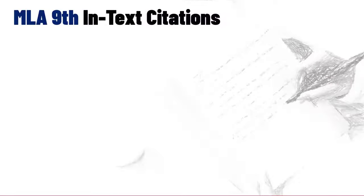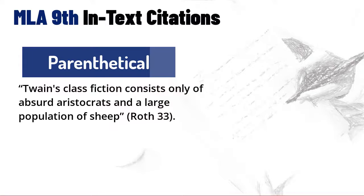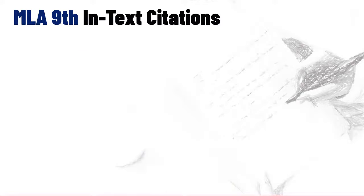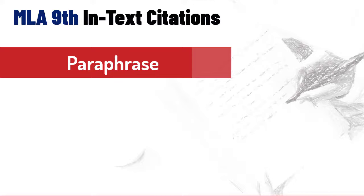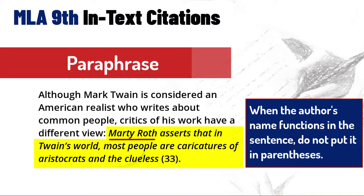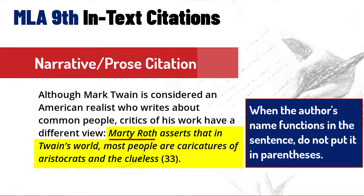Let's take a look. The first is a parenthetical citation, where, as the name suggests, the author's name is inside parentheses — Roth — author's name inside parentheses, then a page number. But what if you paraphrase Roth instead of quoting him? Look at this paraphrase: Marty Roth asserts that, in Twain's world, most people are caricatures of aristocrats and the clueless. 33. When the author's name is a functional part of the sentence, the author's name does not go inside the parentheses. That's called a narrative or prose citation.